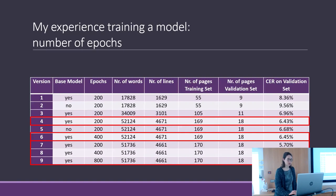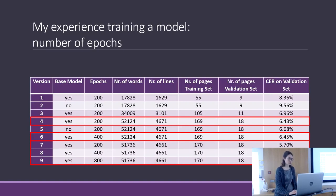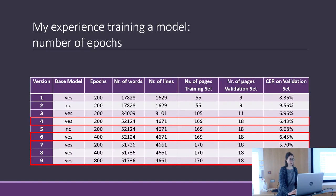I probably don't recommend changing epochs much. Maybe you can try with 50, 100, or 200 epochs, but more is not necessary. At least in my case — it could work if you have very complicated documents or very complicated handwriting.